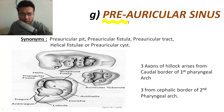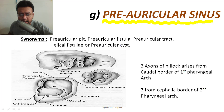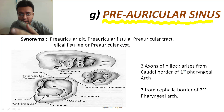Pre-auricular sinus has many synonyms like pre-auricular pit, fistula, pre-auricular tract, helical fistula, or pre-auricular cyst. To understand the formation of pre-auricular sinus it is very important to know the development of the pinna, because it is a developmental disorder or a congenital anomaly.